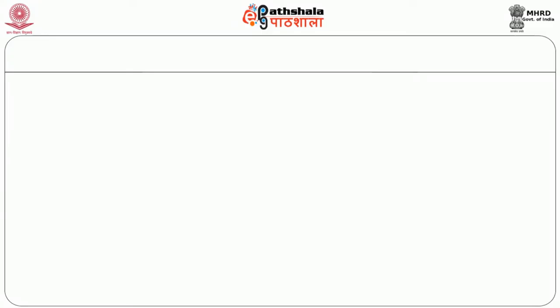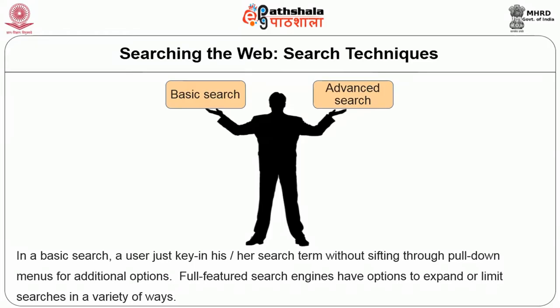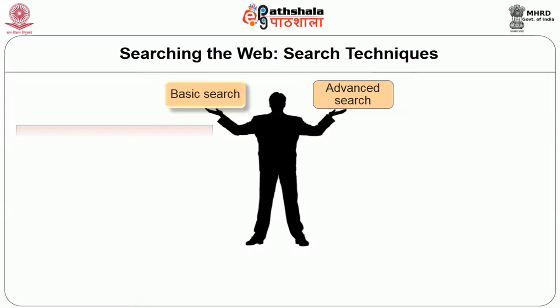Most search engines offer two types of interfaces: basic search and advanced search. In a basic search, a user keys in their search term without going through pull-down menus for additional options. A basic search provides a dialog box where search terms can be entered, followed by options to either submit or clear the search. The user enters keywords or search terms, and the search engine looks through its index and database for matches.